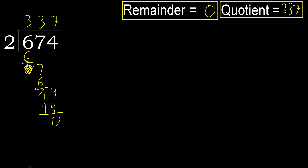Ok, 0 — therefore 674 divided by 2 is here.